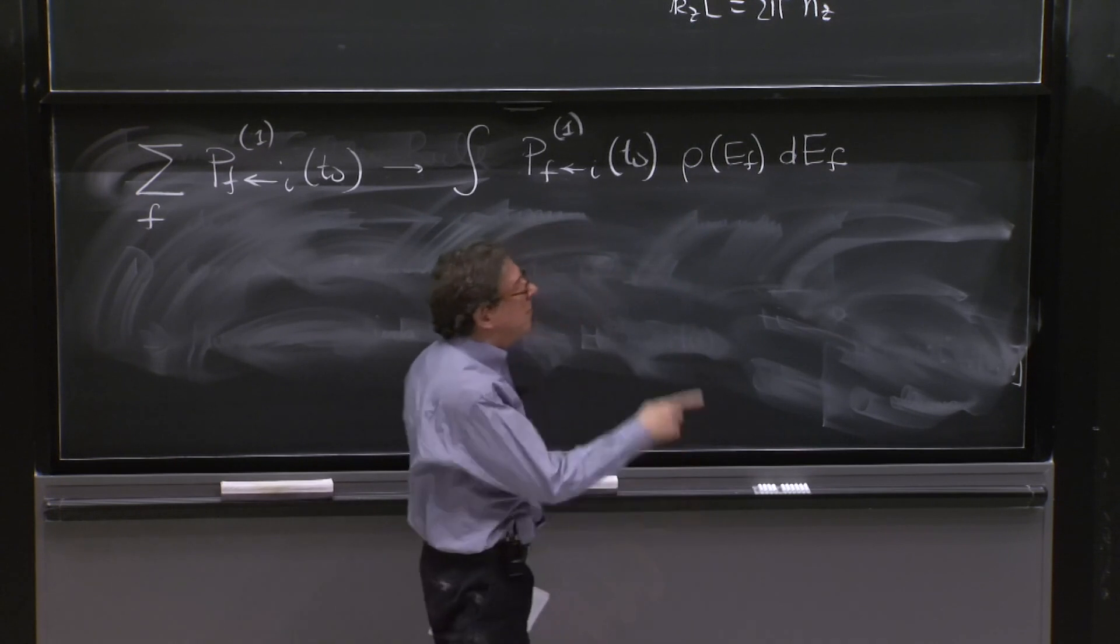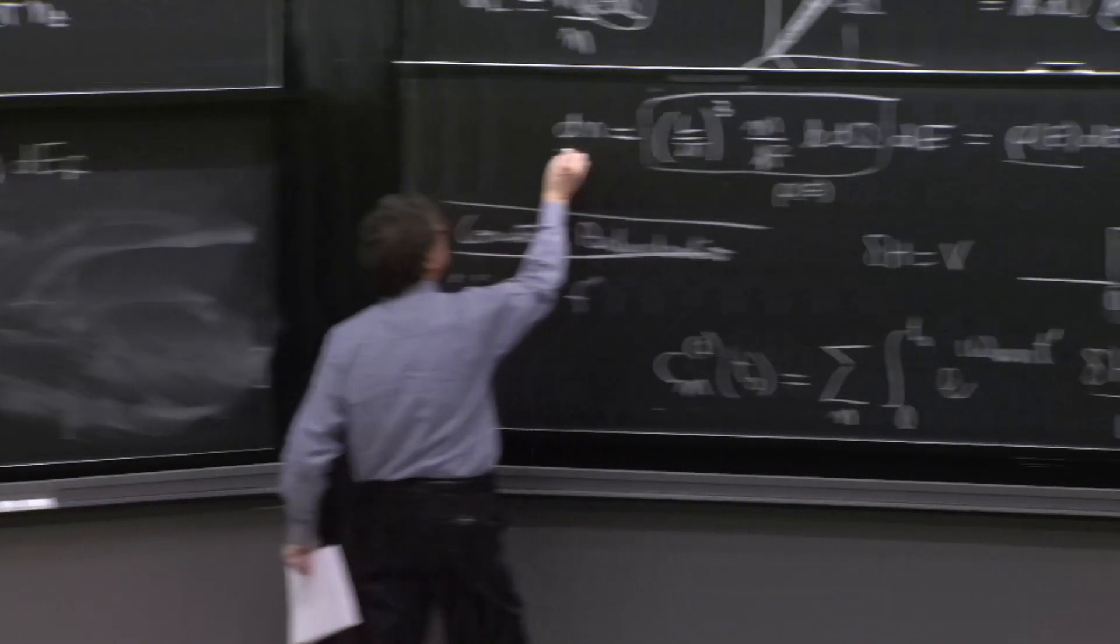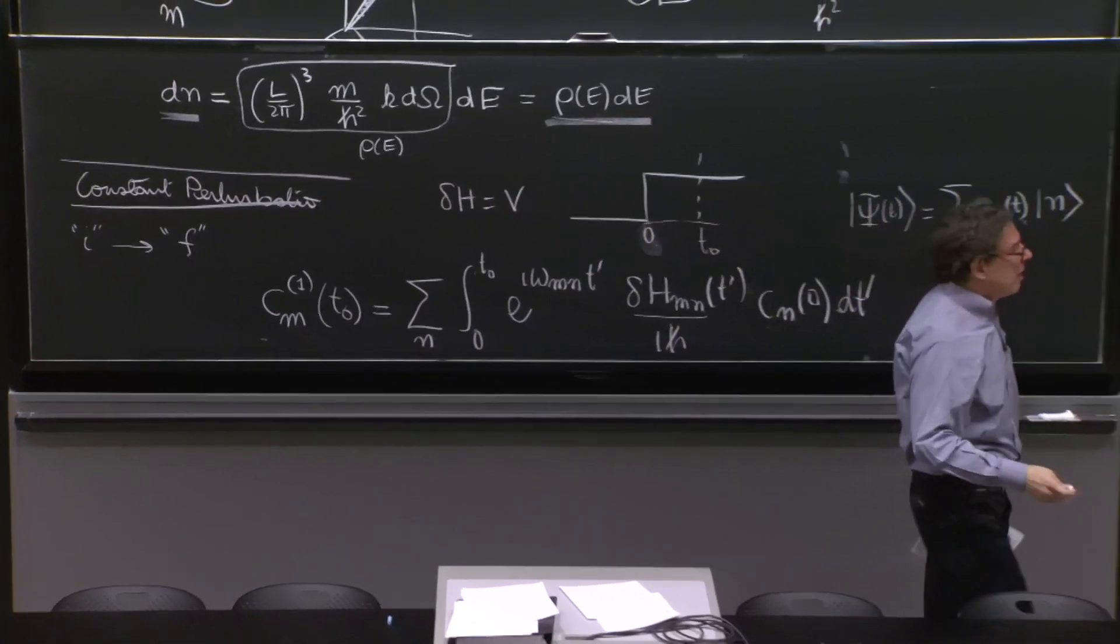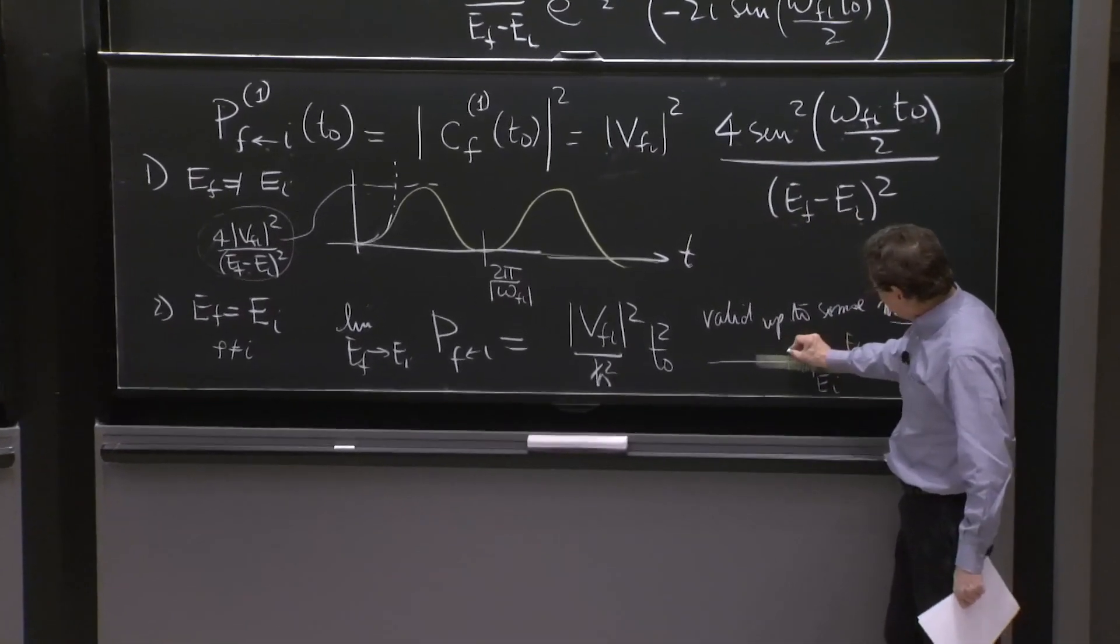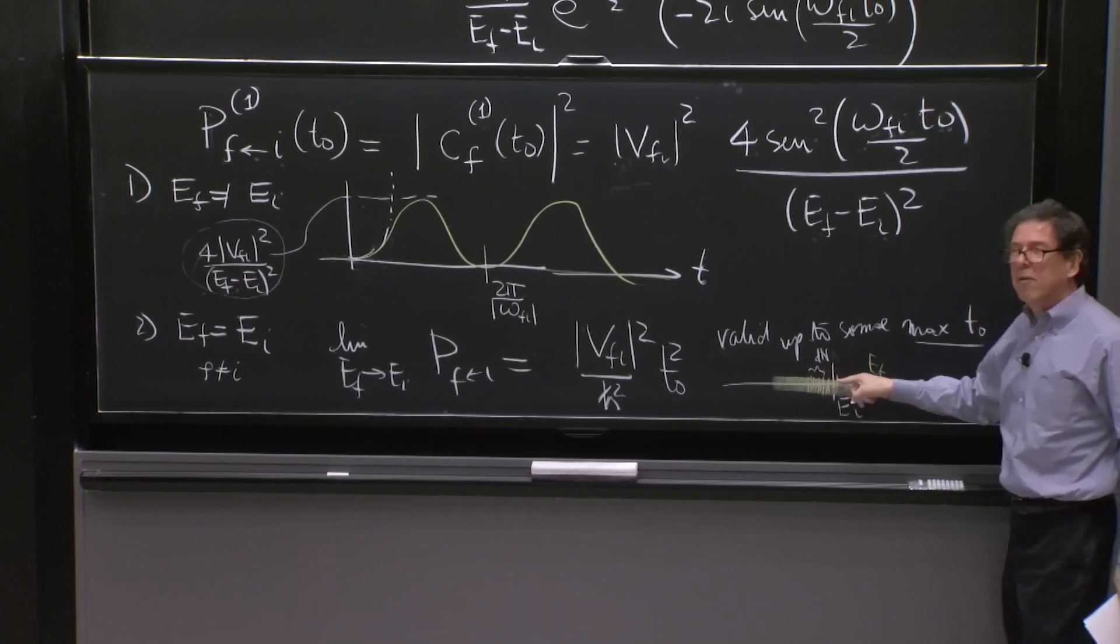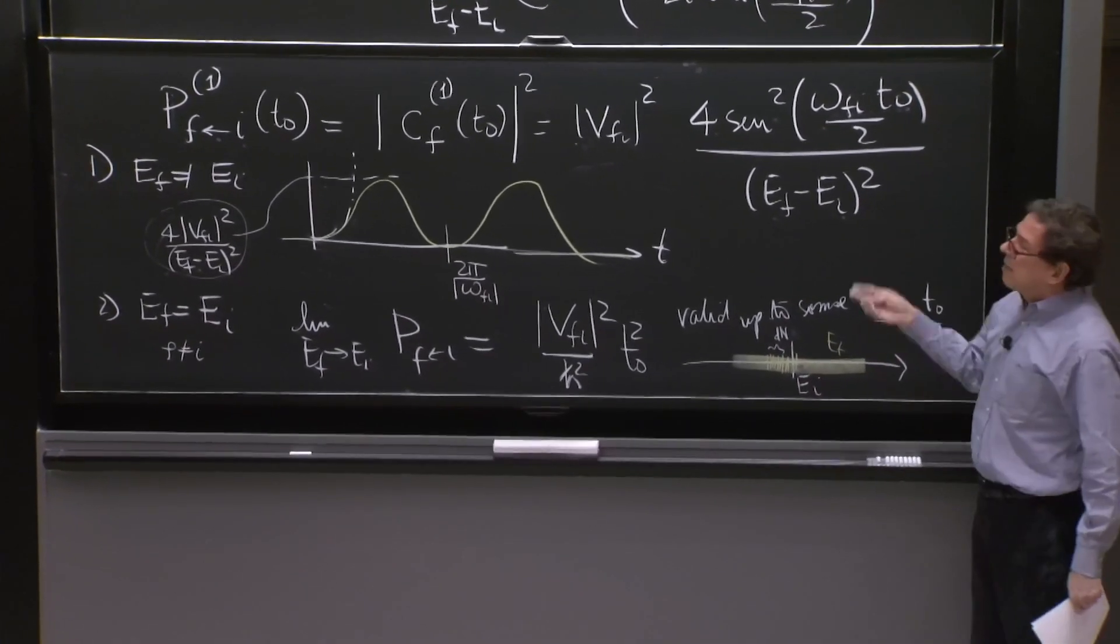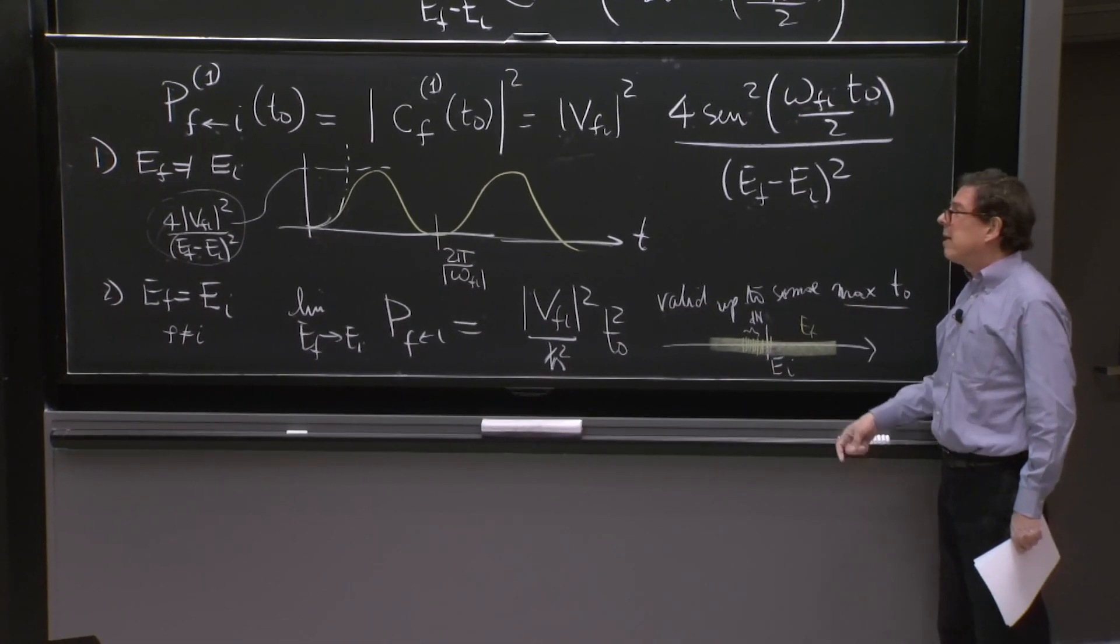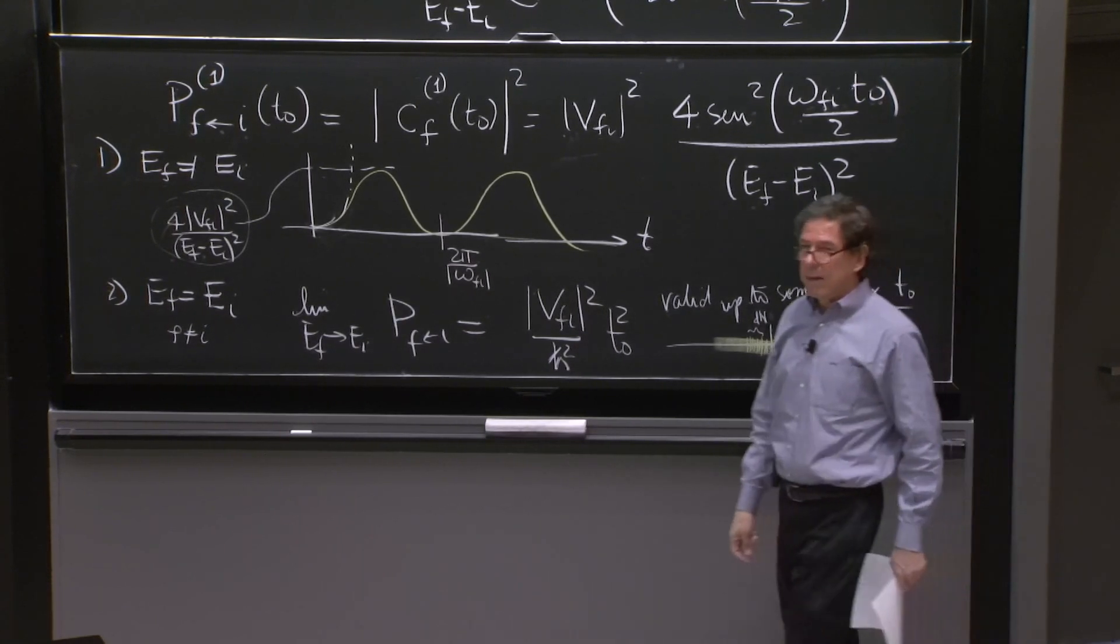So this is what we developed about the number of states. So I'm replacing this. I have to sum, but I basically decide to call this little dn, the little number of states in here. And then I'm going to integrate this probability for the number of states over there. And therefore, the dn is replaced by rho times dEF.